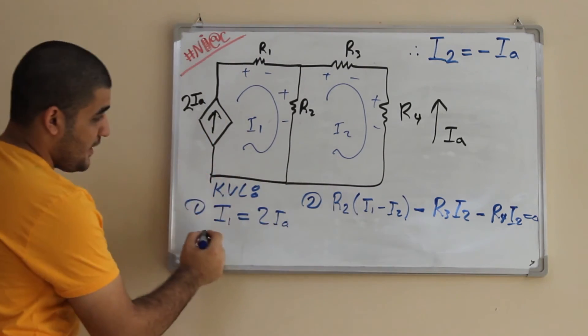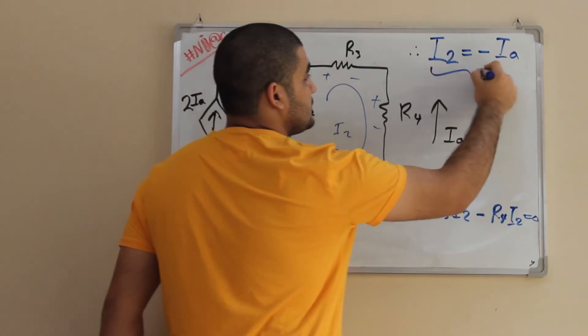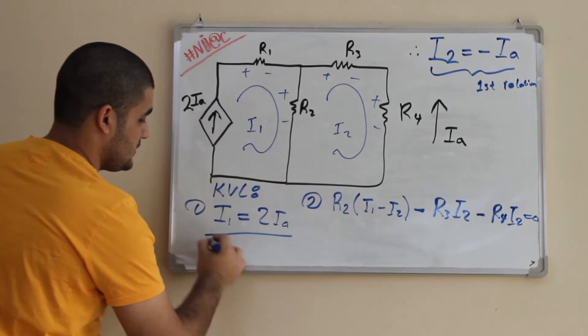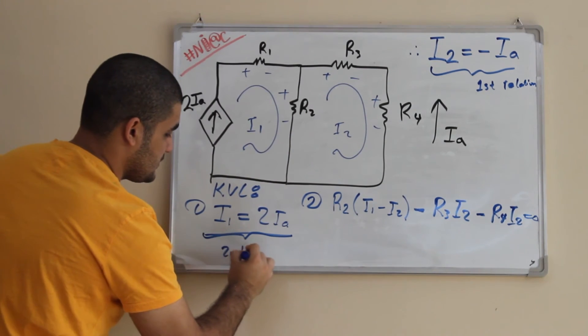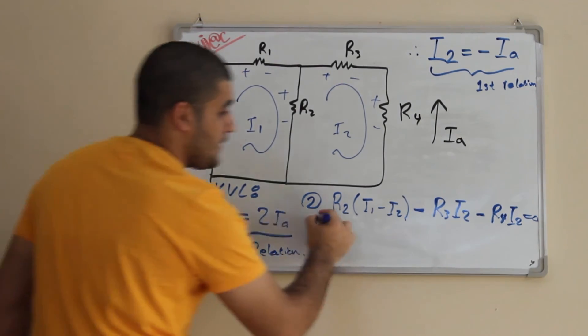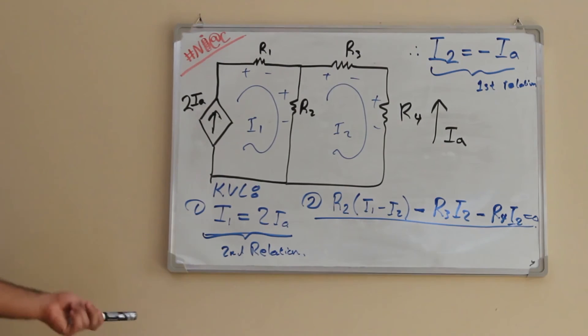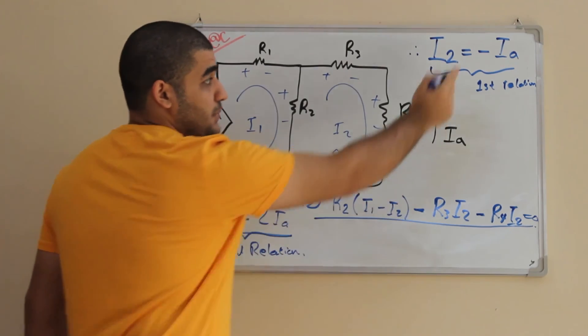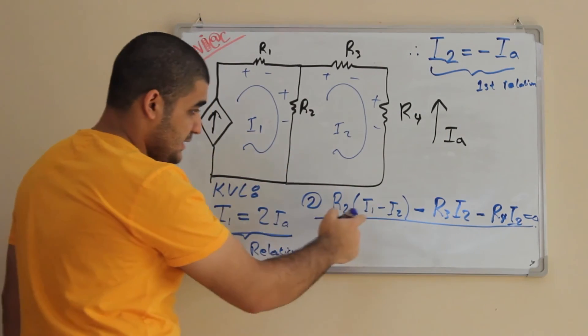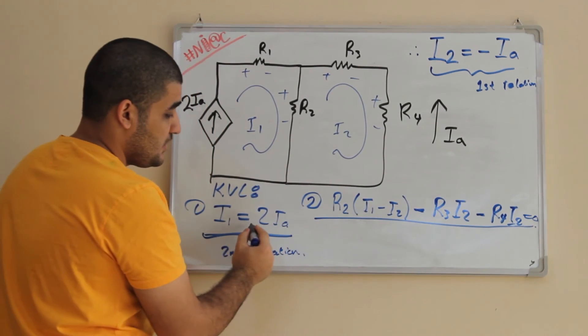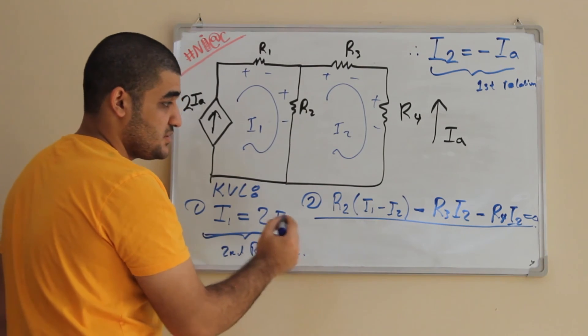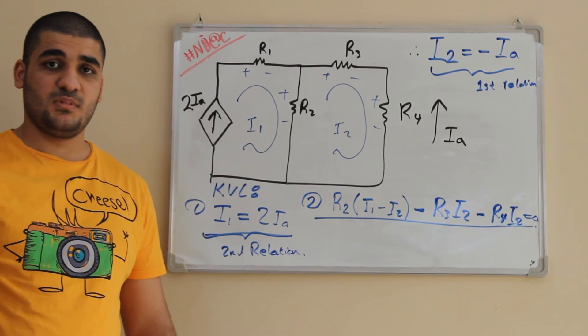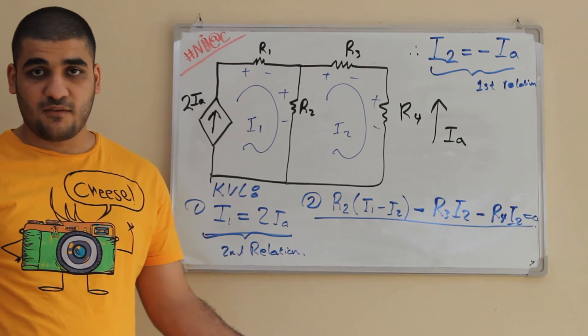So I have two relations now. This is the first relation and this one is the second relation. And I have my main equation. That is very simple as you can see. Wherever in the main equation I have I2, I put minus IA. Wherever in the main equation I have I1, I put 2IA. So at the end I will have one equation that has all the same unknowns, which is IA. I can figure out IA easily.